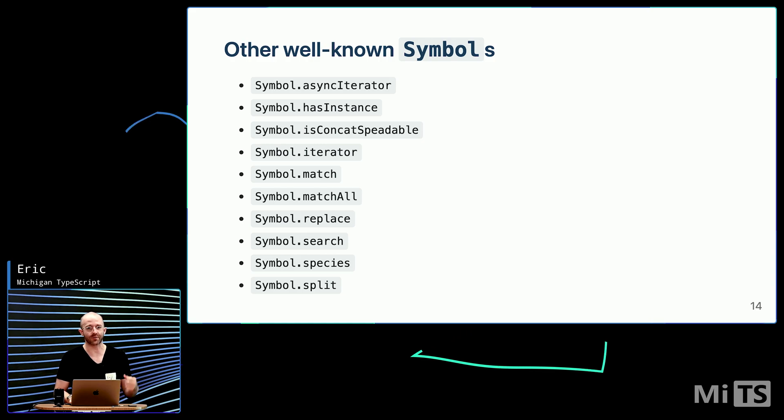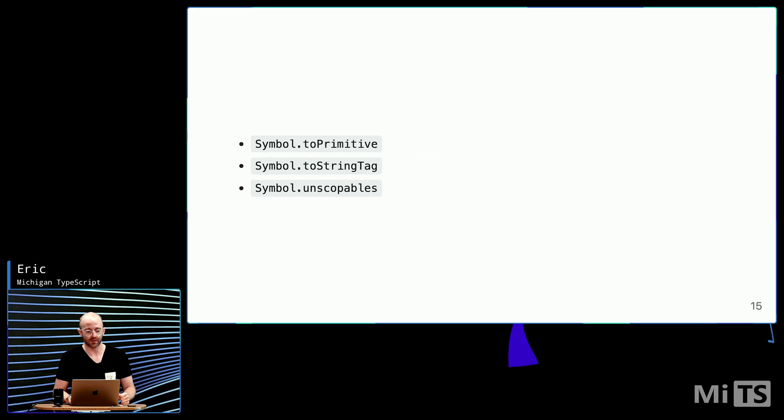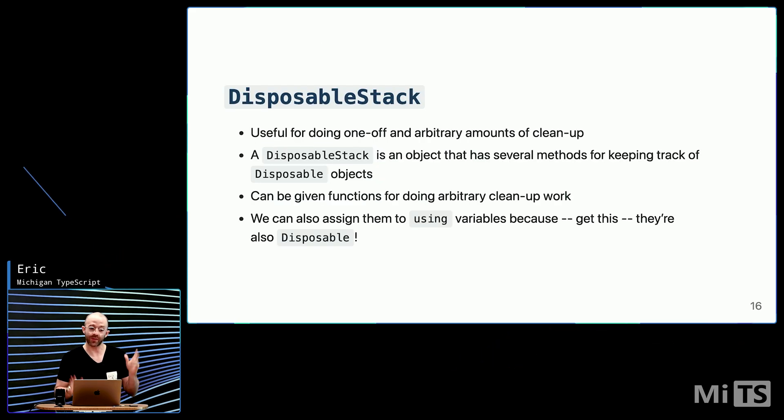Symbols are just static properties on the global symbol object that you can reference. And symbols have to be globally unique across your runtime. With this comes a new class called Disposable Stack.